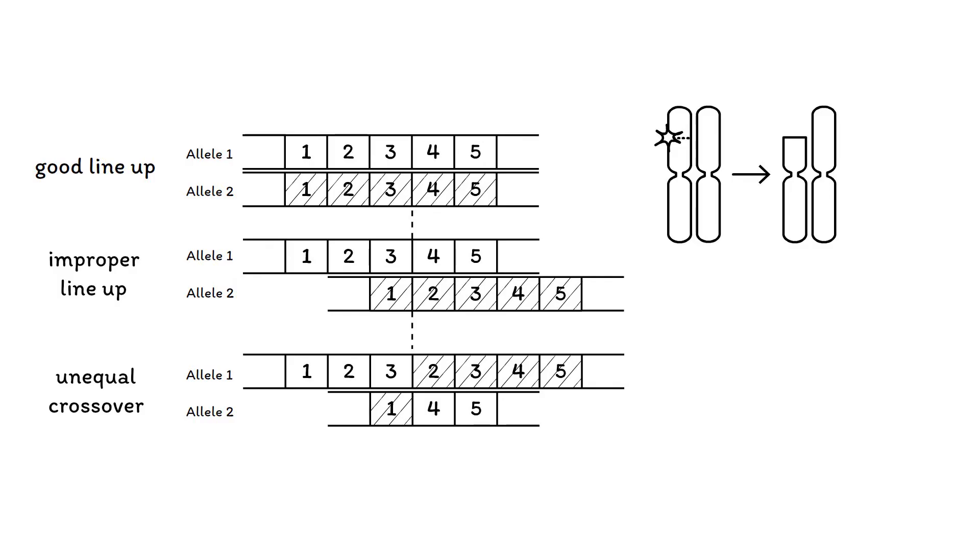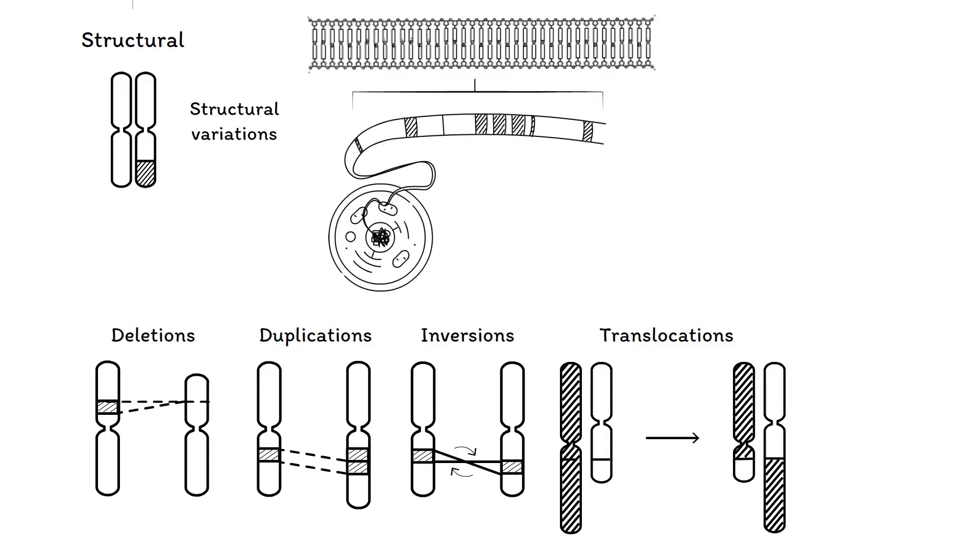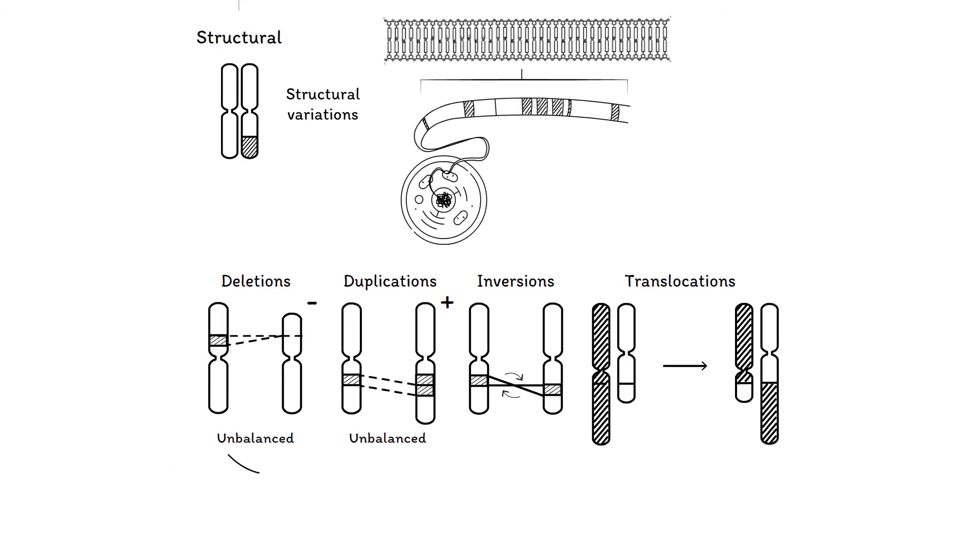In this way, structural variants can arise in somatic cells as well. Structural variants can be categorized as unbalanced or balanced. Deletions and duplications are always unbalanced, as there is a net loss or gain in genetic material. They are also referred to as copy number variations, or CNVs, and may be present anywhere from zero to more than a dozen copies in a genome.